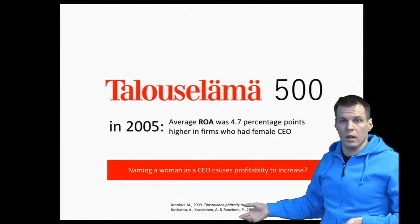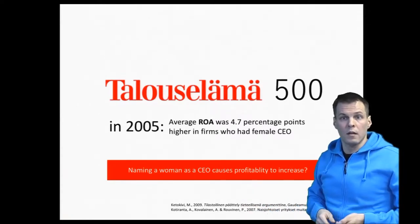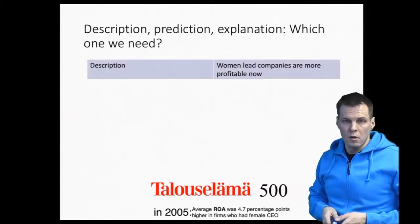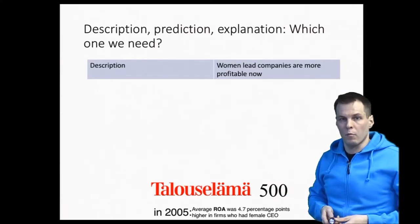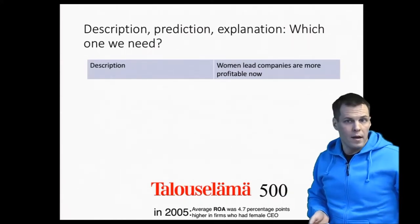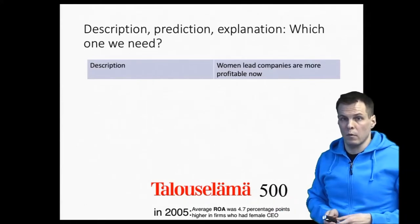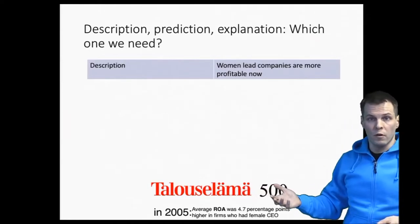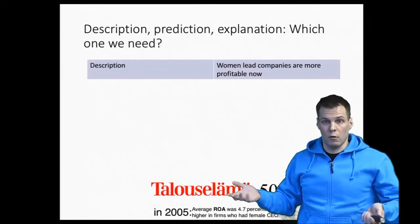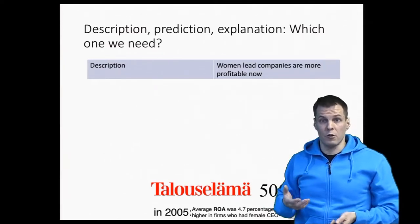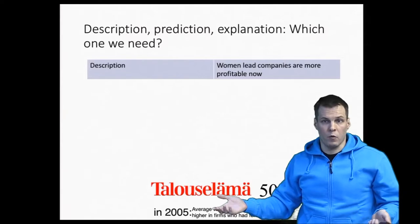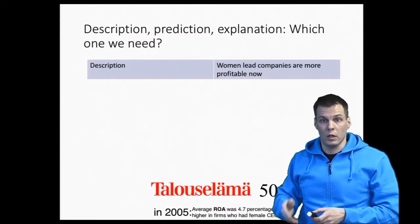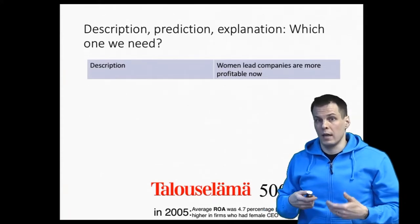To understand what kind of claims we can make generally, let's take a look at three purposes of statistics. The first and most simple one is description. We can just say that women-led companies are more profitable in 2005 and not even try to generalize anywhere. We just state a fact, and that kind of description could be useful. For example, if one third of students taking a research methods course fail, that provides an indication that there's either something wrong with the students or something wrong with the course, even without making any stronger claims.